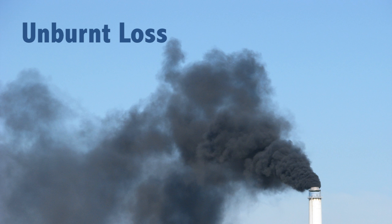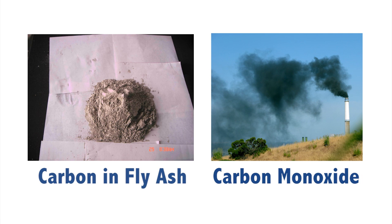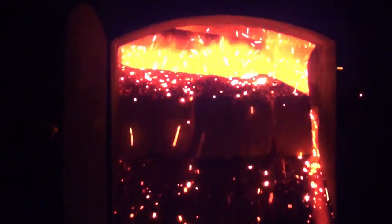Now let us look at unburnt losses. Unburnt losses are the losses that happen due to the carbon in the fuel not getting properly burned, which means the carbon comes out of the boiler either in the form of carbon in fly ash or in the form of carbon monoxide in the flue gases. If one looks at the three T's of combustion — turbulence, time, and temperature — for proper combustion there should be enough turbulence to allow proper mixing of the fuel and the air.